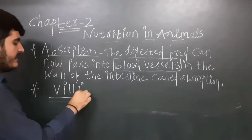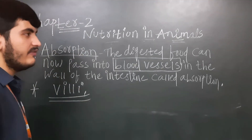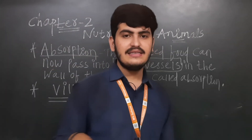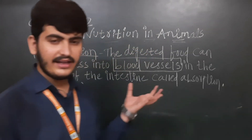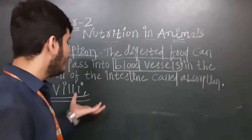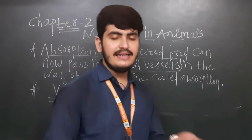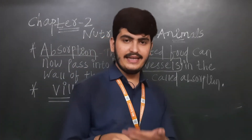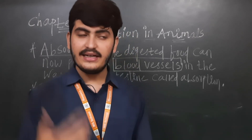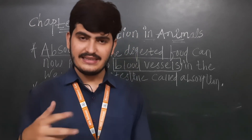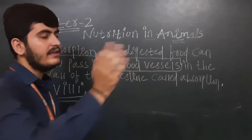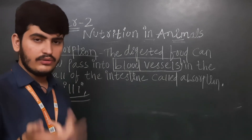The villi are located in the walls of the small intestine. There are thousands of finger-like outgrowths known as villi. Their function is to increase the surface area for proper absorption of food. They are also connected to blood vessels, so they pass the digested food into the bloodstream to be delivered to the rest of the body.